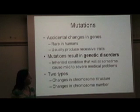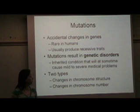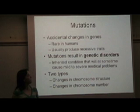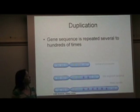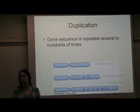We're going to talk briefly about two types of mutations. One is changes in chromosome structure, and we're going to go through four examples of that, and then we're also going to talk about changes in the number of chromosomes that that individual contains. The four types of changes in chromosome structure — one thing that can occur is a duplication, and this is when one simple gene sequence repeats itself multiple times, abnormally.